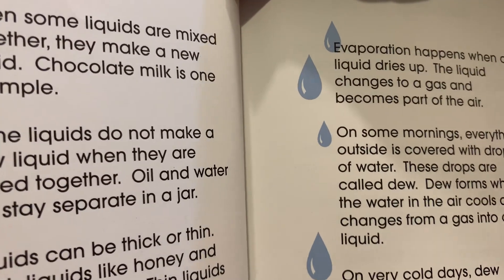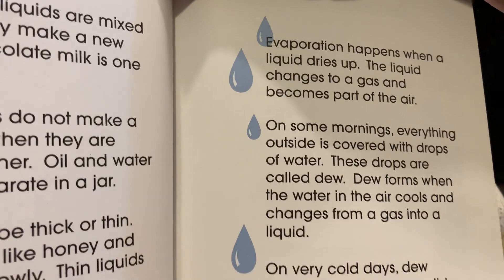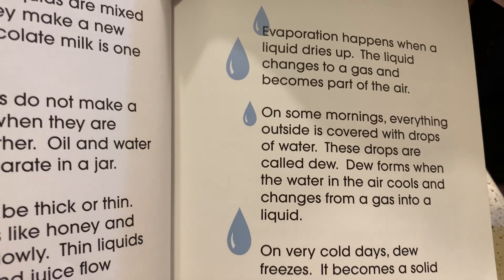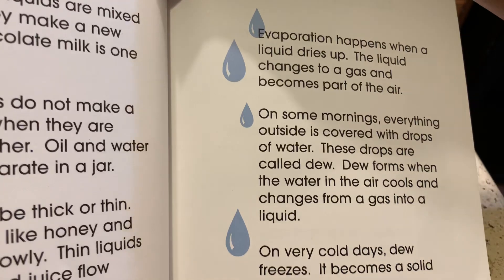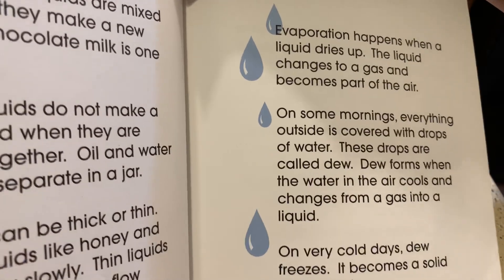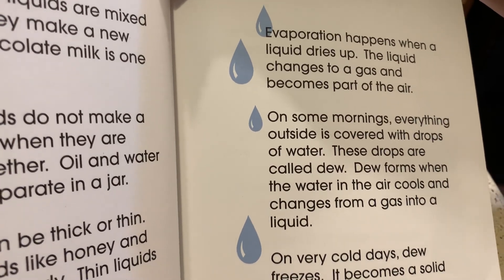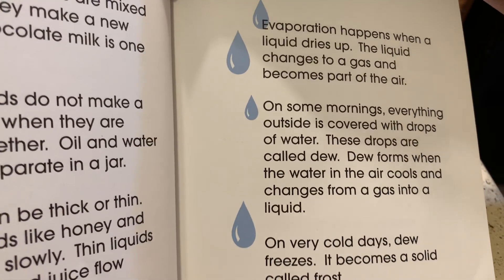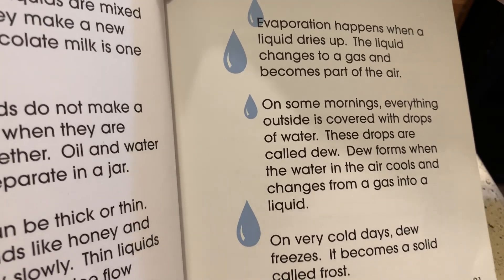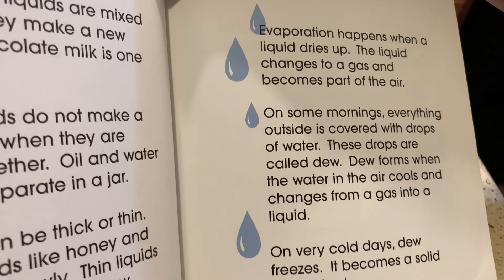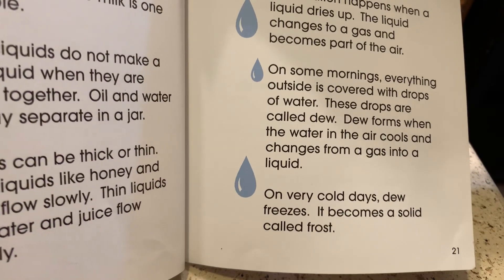On some mornings, everything outside is covered with drops of water called dew. Dew forms when water in the air cools and changes from a gas into a liquid — the water that evaporated and went up into the air comes back down to the ground as a liquid. On very cold days, dew freezes and becomes a solid called frost, which we most often see when seasons change, like fall to winter.